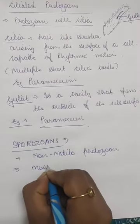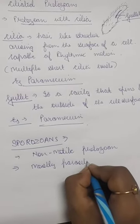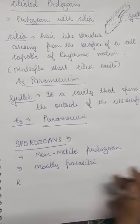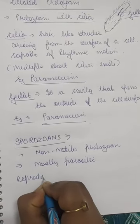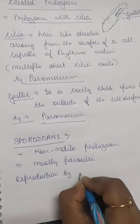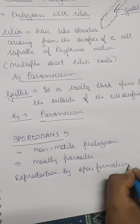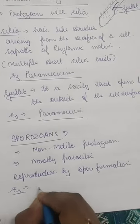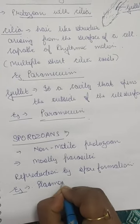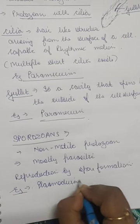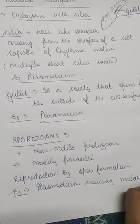Sporozoans are mostly parasitic in nature. They reproduce by the formation of spores. An example of sporozoans is Plasmodium, which causes malaria.